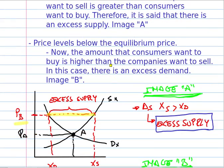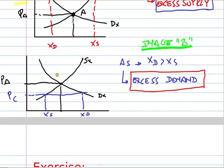Second one: price level below the equilibrium price. Now, the amount that consumers want to buy is higher than what the companies want to sell. In this case, there is an excess demand — Image B. In this opposite situation, when the price levels are like this, the consumers decide to buy more quantity than the companies want to sell.